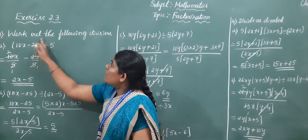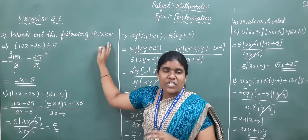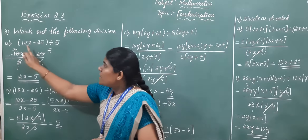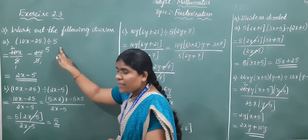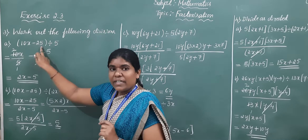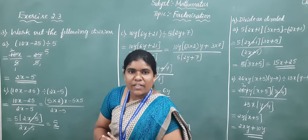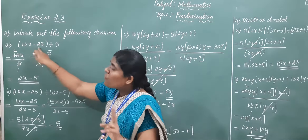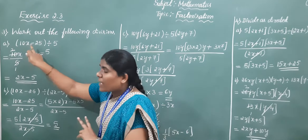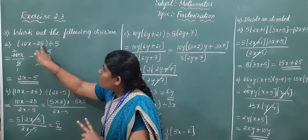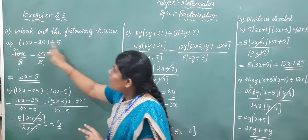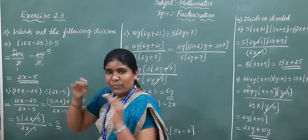The third question is: work out the following divisions. Observe carefully children — how many terms are there here? There are 2 terms. Which type of polynomial is this? A polynomial containing 2 terms is called a binomial. Here, a binomial is divided by a monomial. You split the 2 terms one by one.